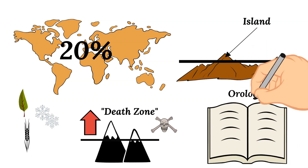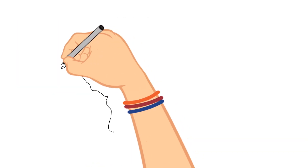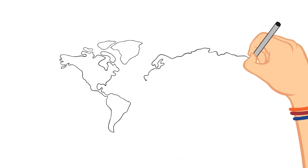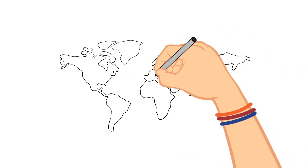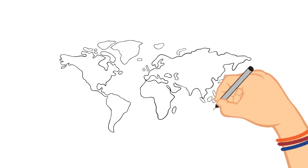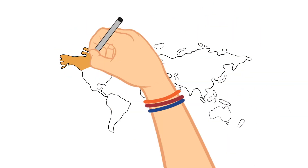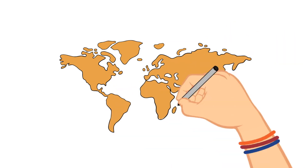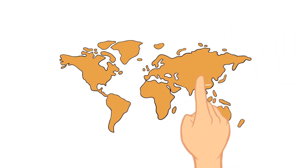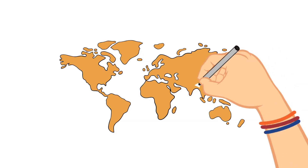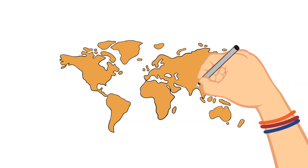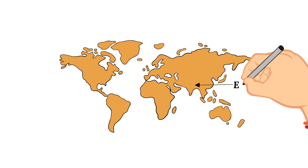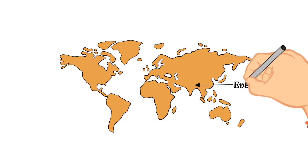Now let's talk about the highest mountains on each continent. First, we'll start with the highest mountain of all mountains — and this is Mount Everest. Mount Everest is the highest mountain in Asia and the world. It is located in Nepal and Tibet, and it sits at a whopping 29,035 feet.